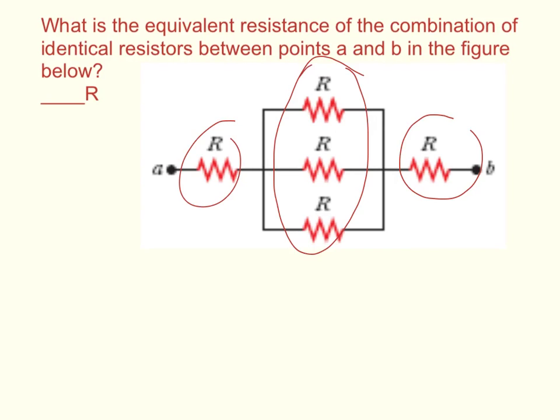So to add them that are in a parallel circuit you just take 1 over R plus 1 over R plus 1 over R.